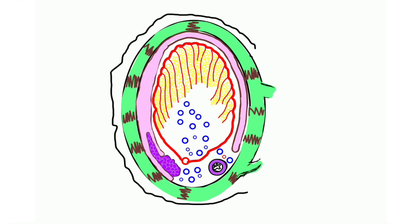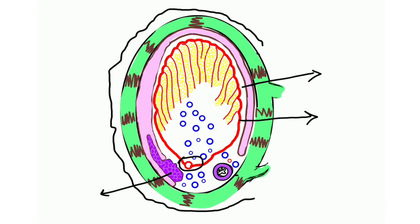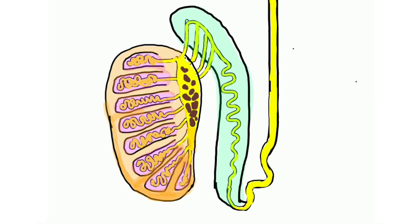The next layer is the tunica albuginea, which is a thick fibrous layer. Inside that is the tunica vasculosa, which is the vascular layer derived from the testicular artery. The epididymis has a head, and from the testes the vas deferens arises. The vas deferens is supplied by the artery to vas deferens, while the testes itself is supplied by the testicular artery.